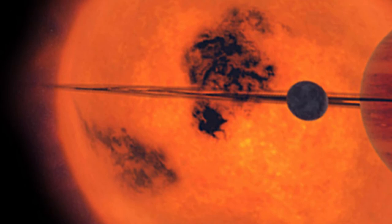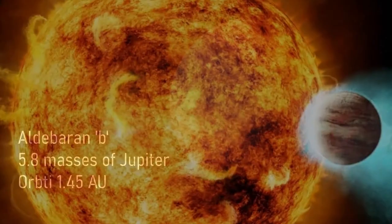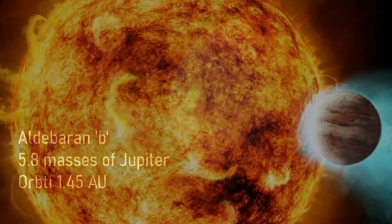A giant exoplanet with at least 5.8 times the mass of Jupiter, it orbits at a distance of around 45% further than the Earth does from the sun. Given Aldebaran's huge size, unfortunately that means it is almost a fireball, and the equilibrium temperature of the planet is likely to be around 1500 Kelvin.